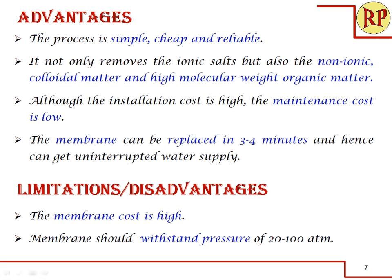The water we collect out is called reverse osmosis water, or RO water, which we are familiar with. This process has many advantages. It is very simple, cheap, and reliable. It not only removes ionic salts but also non-ionic matter, colloidal matter, and high molecular weight organic matter. Although the installation cost is high, the maintenance cost is very low. The membrane can be replaced in 3 to 4 minutes, and hence we get uninterrupted water supply.